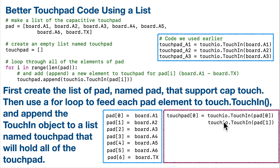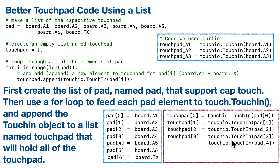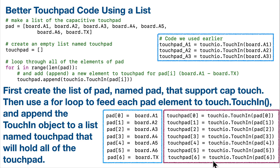Each time we go through this loop, we're increasing the size of the array because we're appending a new touch_in object. When we're done, instead of creating a separate touchpad_A1, touchpad_A2 for all seven pads, we instead have just one list named touch_pad, and each element in that list is a working touchpad — seven elements associated with touchpads A1 through TX. If we did it the old way, this would have taken seven lines of code; here it only takes four lines.